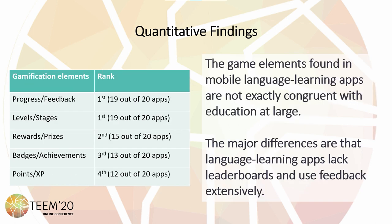Surprisingly, there were a few differences between the game elements found between language learning apps and other educational contexts. In education, it's generally found that points, badges, and leaderboards are very prominent. However, most of the language learning apps lacked leaderboards. Only 7 out of the 20 apps had leaderboards, but 19 out of 20 implemented feedback. And having a feedback element makes sense in language learning because students need to know how well they performed.